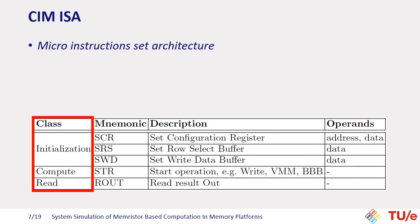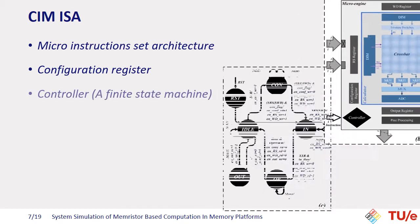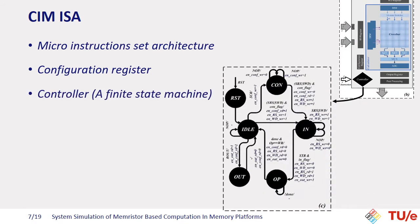To perform a vector matrix multiplication operation, for example, first the necessary parameters — like the coordinates of the window of the crossbar that will be selected — are written to the configuration register. Then the controller, which is essentially a finite state machine, manages the operation based on the parameters in the configuration register. A detailed explanation of how an operation is done by passing a set of instructions can be found in the paper.